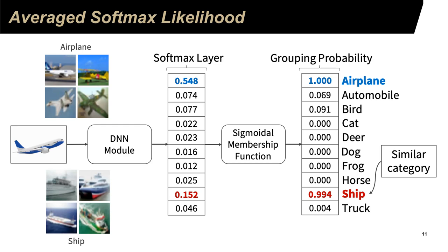Suppose the input is an airplane — the softmax layer uses a sigmoid function, and the sigmoid function has the property that it will amplify the similarity when the variable is larger. In this case, if the input is an airplane, it has 54.8% chance to be recognized as an airplane, which after the sigmoid function goes all the way to 1. If the input is an airplane, it also has 52.2% chance to be recognized as a ship, and after the sigmoid function it has 0.994. So we will put airplane and ship together in the same category.